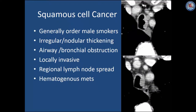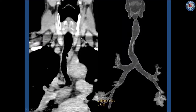Squamous cell cancers of the trachea generally occur in male smokers. These are irregular nodular tumors that cause narrowing of the trachea, thickening of the wall, and often extend into the adjacent soft tissue by local invasion. They are associated with regional lymph node spread and hematogenous metastases. A coronal image demonstrates a nodular area of thickening in the left lateral wall of the trachea, also seen on 3D surface rendering.